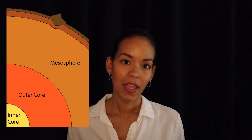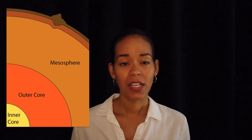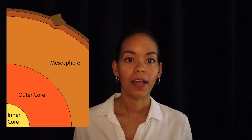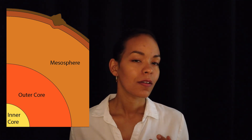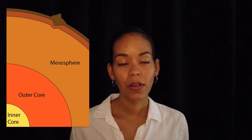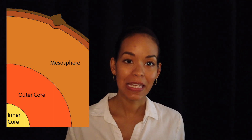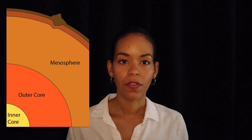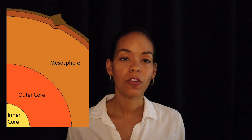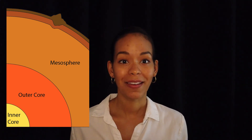The rest of the mantle beneath the asthenosphere is called the mesosphere, and it is much more rigid than the upper mantle but not brittle like the crust — think stiff plastic. The outer core is made up of liquid iron and nickel and sits beneath the mesosphere. It is the only layer of the Earth that is a true liquid, and flow of this liquid in the outer core is responsible for Earth's magnetic field.